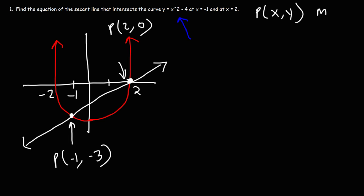So now that we have the two points on the secant line, we can use those two points to calculate the slope of the secant line. And we're going to use this familiar formula. You've seen it before.